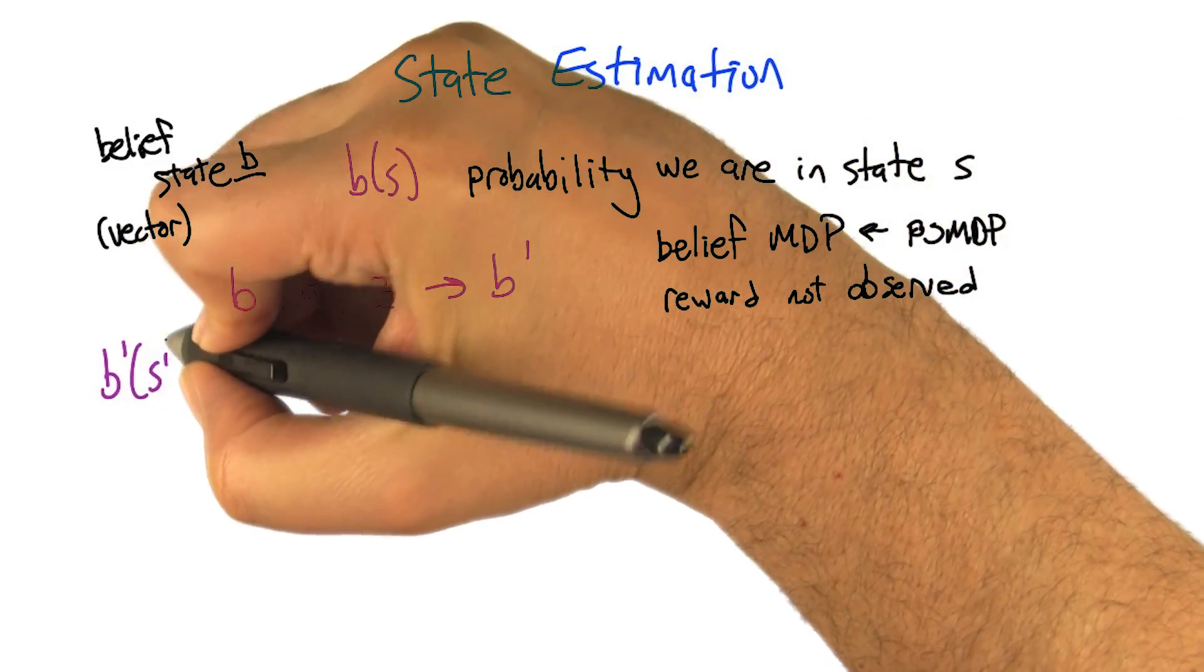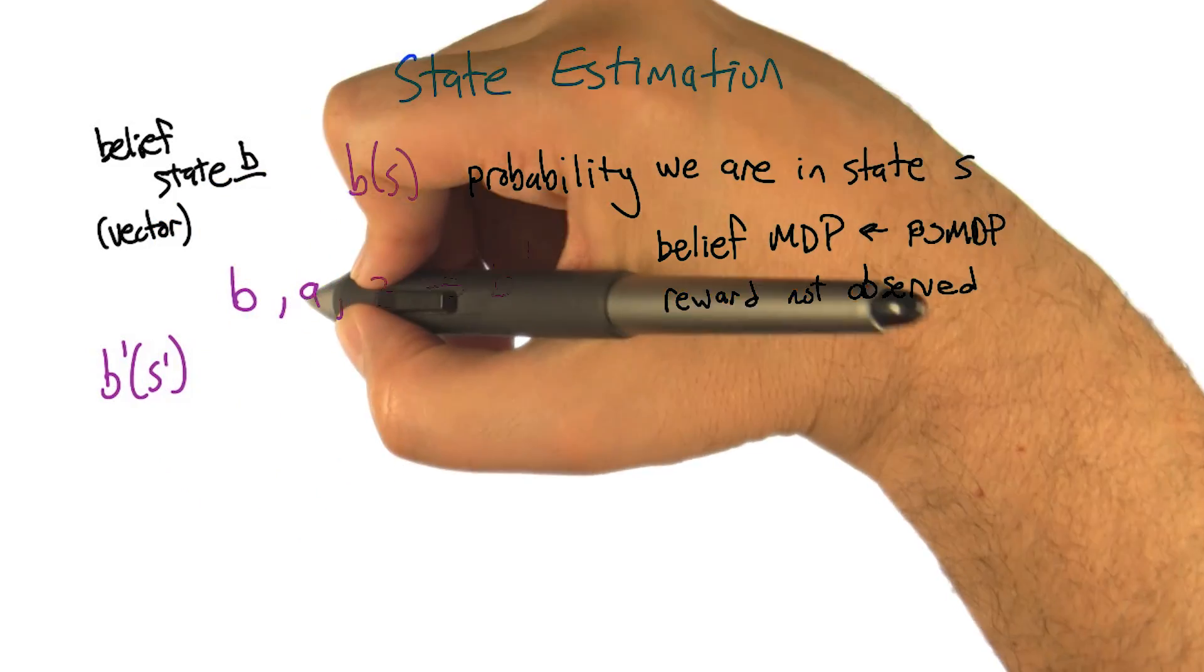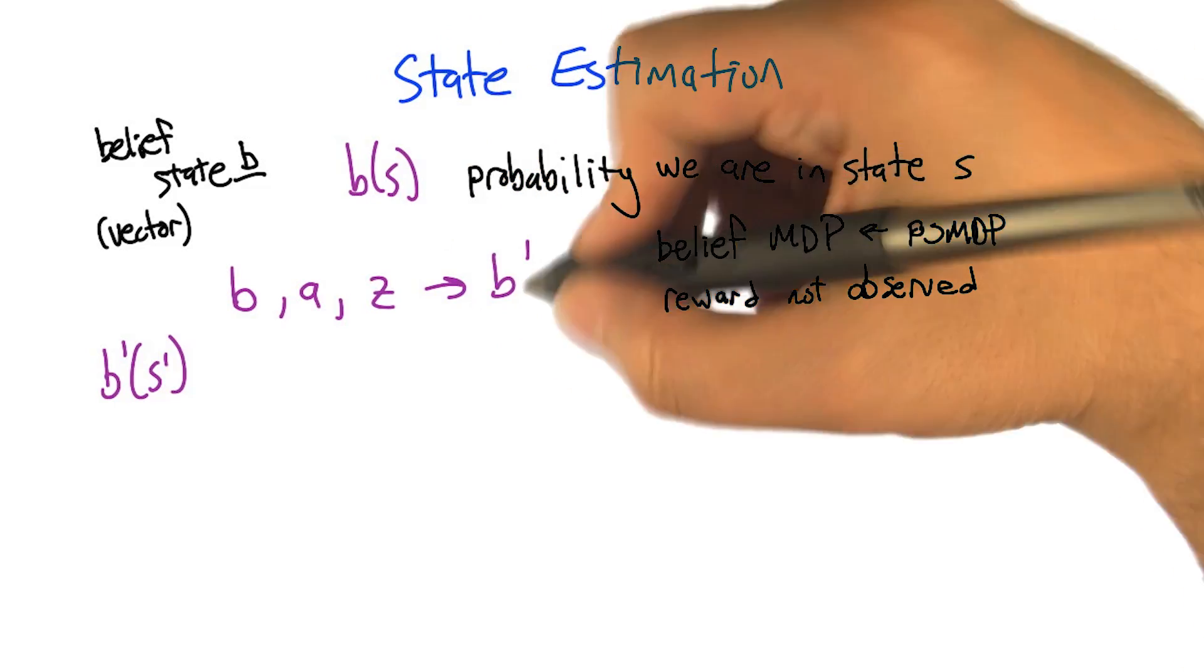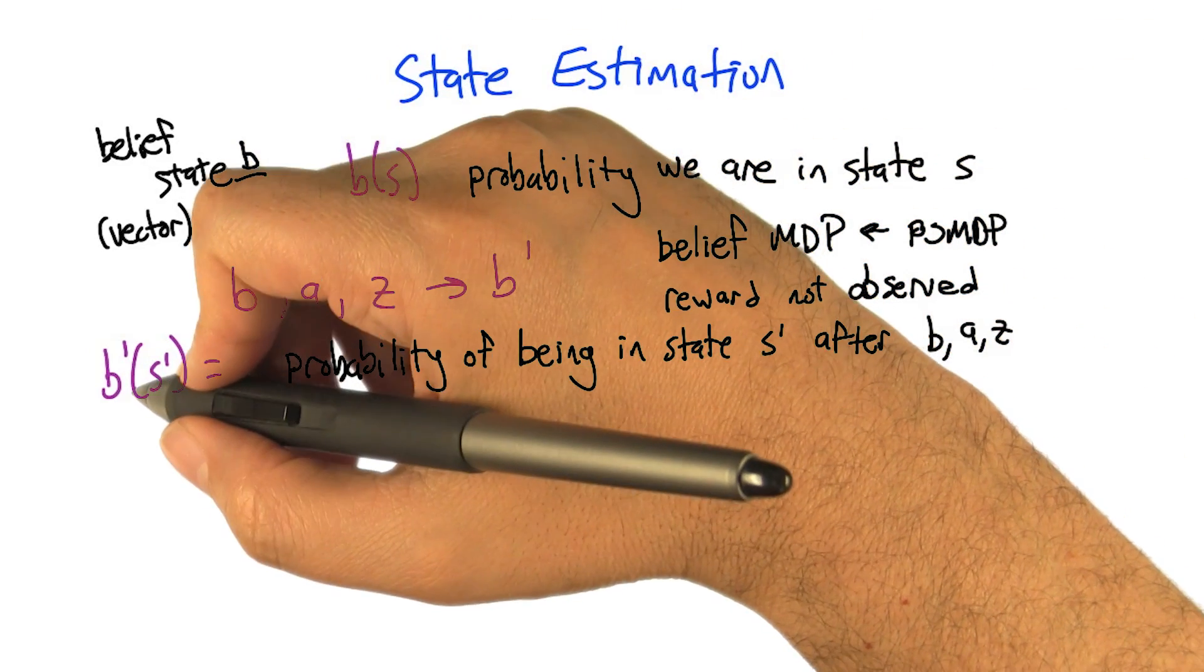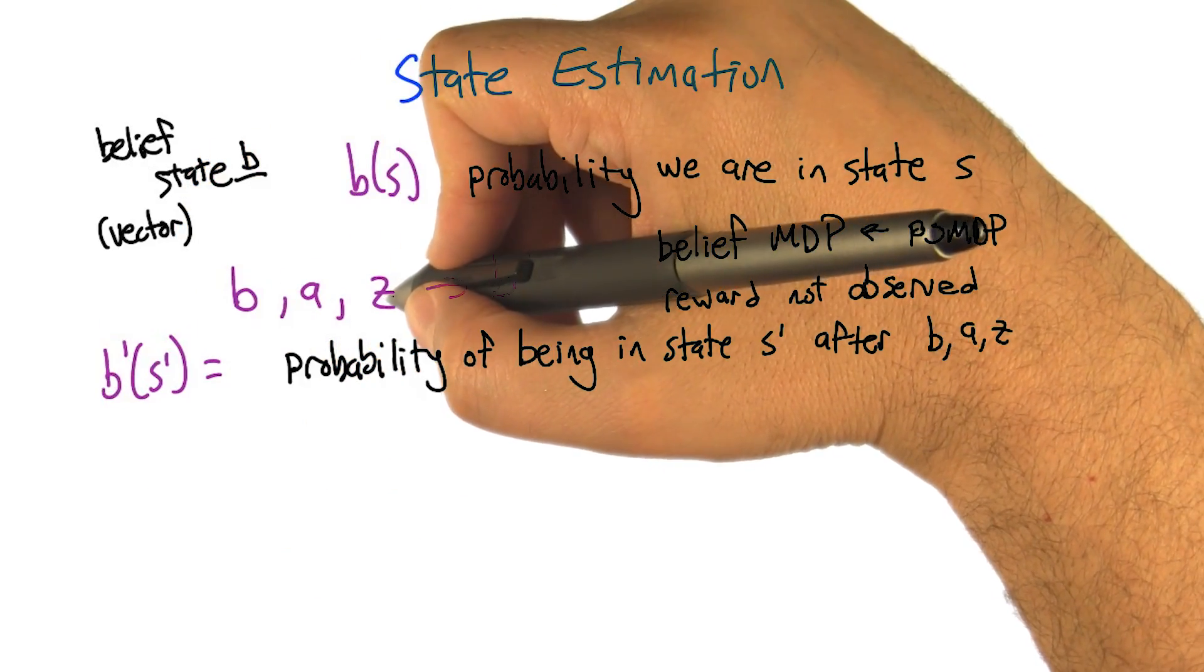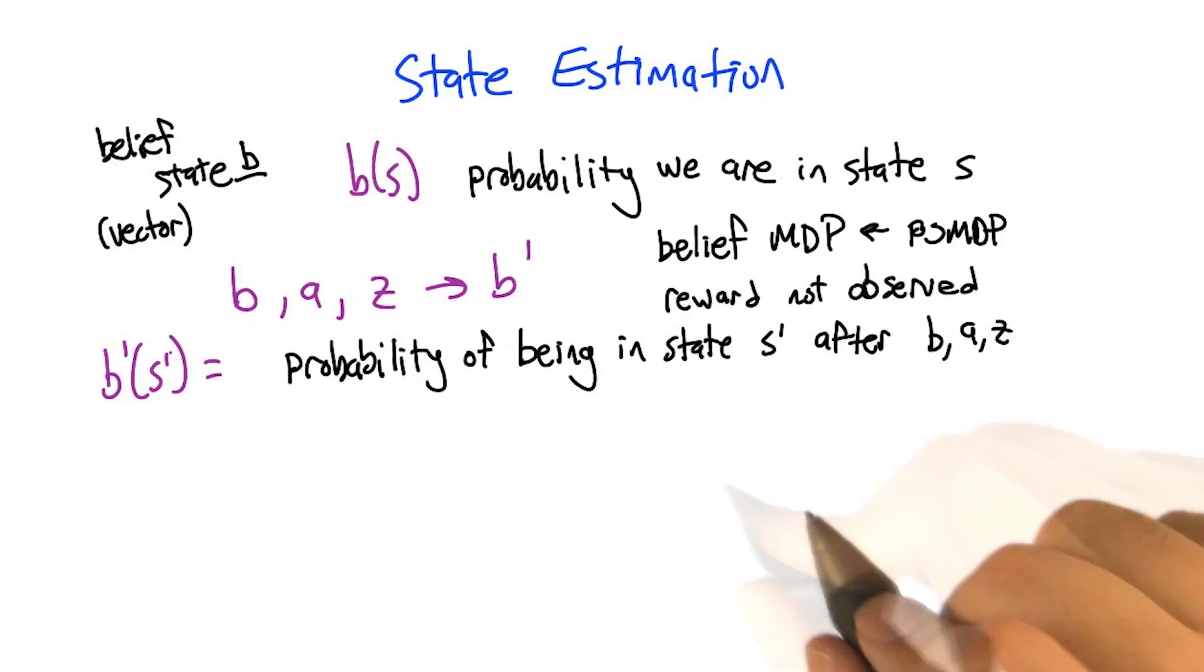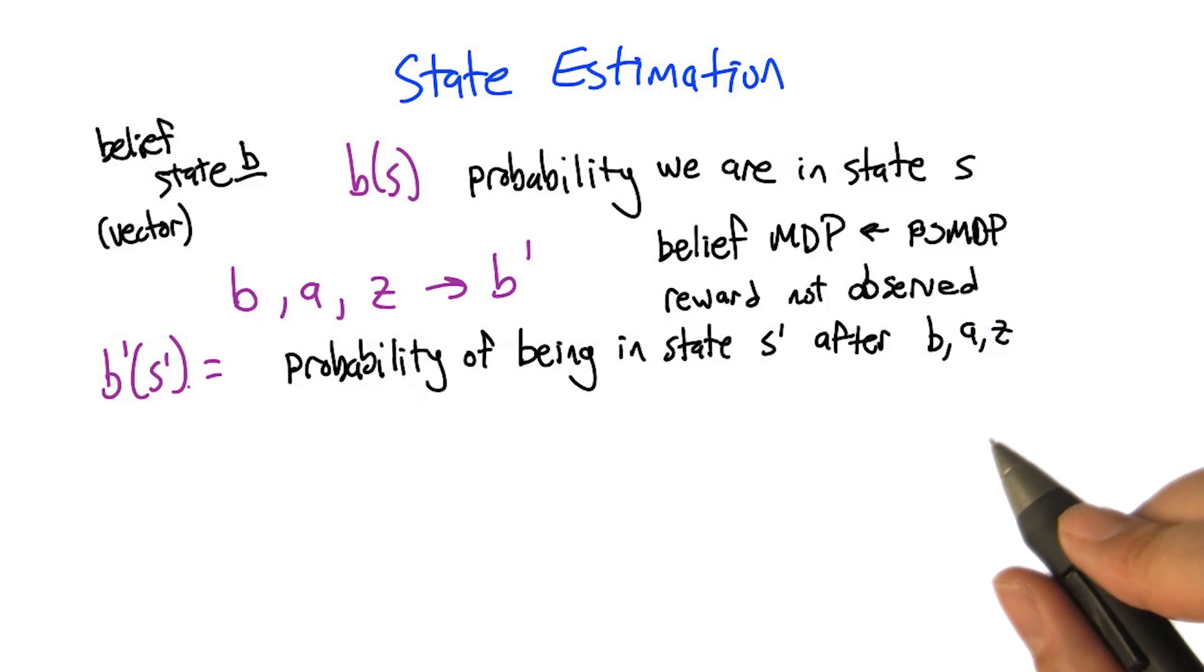All right, so what we need to do is derive how we get this probability distribution over states, B prime, from the old belief state, the action, the observation, and whatever quantities in the POMDP that we have. So what we need to figure out is in this new belief state after we've taken action A and seen observation Z, what is the probability that we're in state S prime? And so we're going to have to do some kind of probabilistic inference or derivation to work that out.